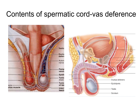Now we will see the contents of the Spermatic Cord. The Spermatic Cord contains structures which move towards and away from the testis. The vas deferens is a muscular tube which carries spermatozoa from the epididymis to the ejaculatory duct. It begins at the lower pole of the testis, ascends behind the testis, enters the Spermatic Cord — where it lies posterior to all other structures, and vasectomy is usually done at this space — then travels through the inguinal canal and enters the abdominal cavity through the deep inguinal ring.